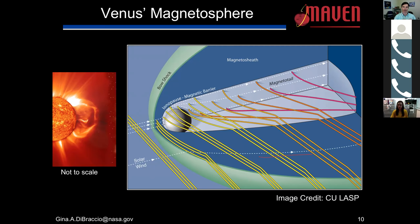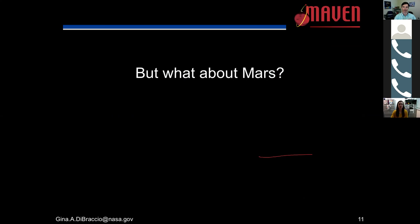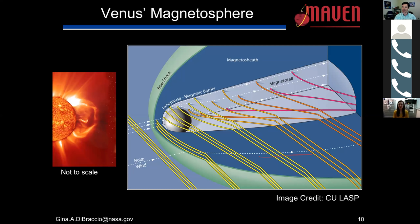That covers the background for intrinsic and induced magnetospheres. Now for some audience questions. One asks how the magnetosphere at Venus is induced. Venus does not have its own magnetic field, so the sun's magnetic field interacts with Venus's atmosphere and ionosphere. Because the ionosphere is filled with charged particles, it connects with the sun's magnetic field and can even generate some magnetic fields of its own within the ionosphere. Without the solar wind and the sun's magnetic field, there would be no magnetosphere at Venus since there is no intrinsic magnetic field.